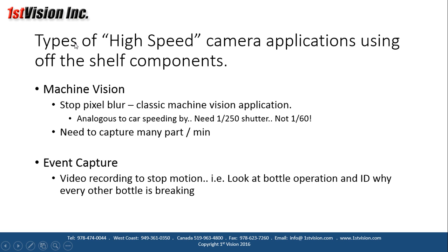One thing I want to look at is types of high-speed camera applications using off-the-shelf components. We'll look at two specific areas: machine vision and event capture. In machine vision we want to stop pixel blur on applications moving relatively fast, maybe to do some measurements. For example, a car speeding by — we can't use 1/60th of a second; we may need 1/250th of a second to stop that motion. Similarly in industrial imaging, we need to capture many parts per minute with repeatability in the repetition rate of those parts going by.